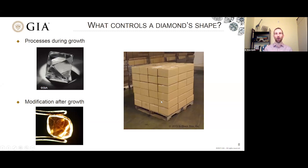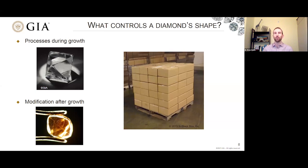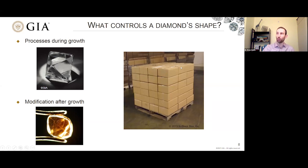These boxes are like building blocks arranged neatly. This isn't exactly why diamonds grow the way they do, but it gives you a sense that when you have building blocks, there's a certain neat and orderly way to set them up. And if you had to take a box off that stack, you might take it from the corner or from the edge — you're not going to take it from the face. The same sort of thing applies to diamonds.